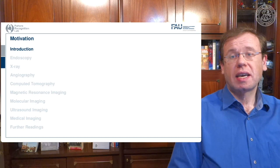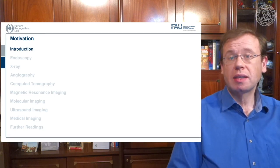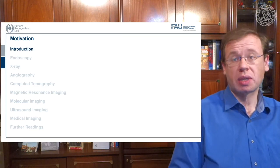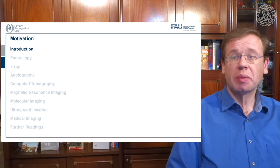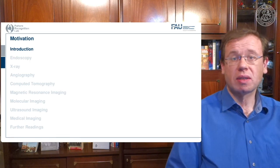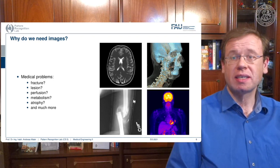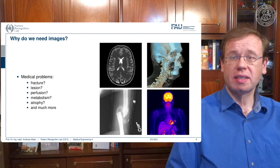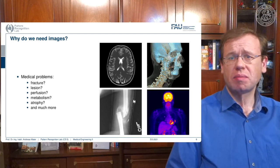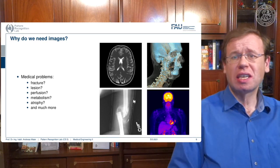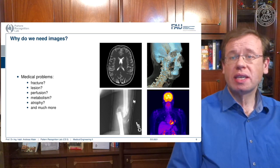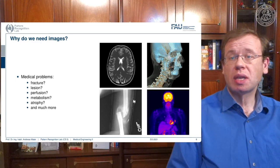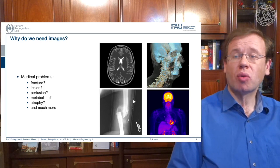Let's look at the structure of the class. We will walk through different medical imaging modalities. We will introduce the topic of general image and signal processing — what an image is, how to process these images, how to detect fractures, what perfusion images are, what lesions are, whether we can image metabolism, and many other things visible on medical images. We have 3D and 2D modalities and all kinds of images used in medicine to perform diagnosis.